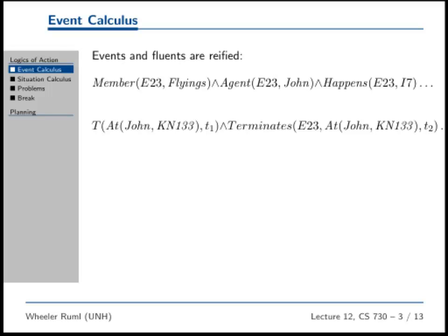At John Kingsbury N133 at T1 terminates — the event 23 was terminated by John's being at Kingsbury. So John flew to N133.